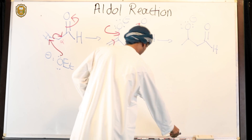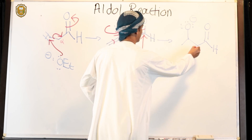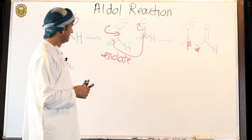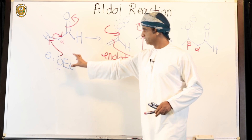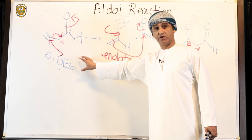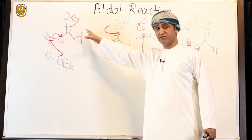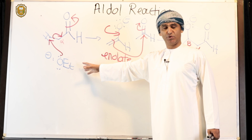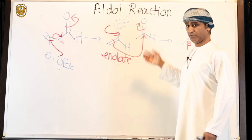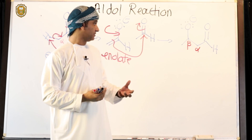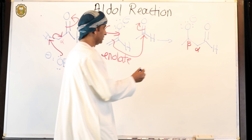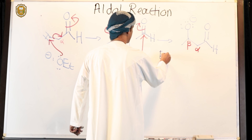A beta-alcoxy aldehyde is formed. As a result of the initial deprotonation step, there is ethanol — a catalytic amount — because remember, catalytic amount of ethoxide is actually used. For example, one mole of acetaldehyde with 0.01 mole of ethoxide gives 0.01 mole of enolate, which reacts with 0.01 mole of unreacted aldehyde to give the beta-alcoxy aldehyde plus ethanol, which acts as a proton source.